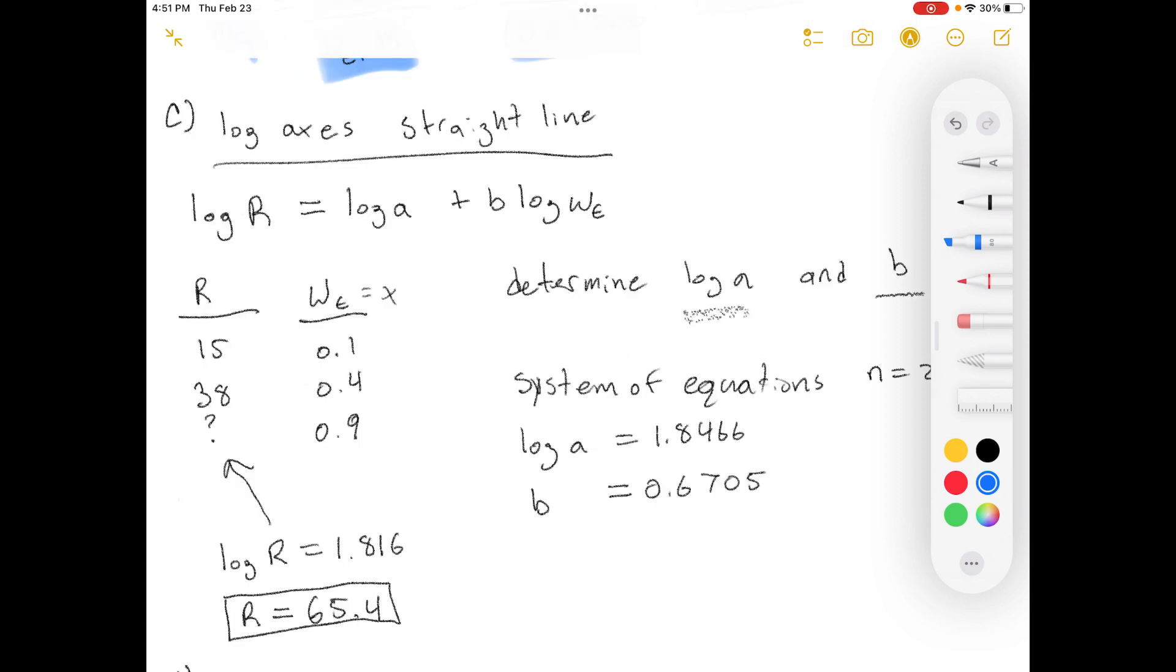Now let's do part C. An analyzer is available to determine the composition of ethanol water mixtures. The calibration curve for the analyzer is a straight line on a plot on logarithmic axes of mass fraction of ethanol X versus analyzer reading R. The line passes through the points R equals fifteen, X equals zero point one, and R equals thirty eight, X equals zero point four. Derive an expression for X as a function of R based on the calibration and use it to determine the value of R that should be obtained if the top product stream from the distillation column is analyzed. Okay so they gave us these two points and then they said what should R equal if X is equal to zero point nine.